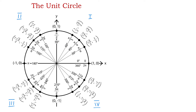In quadrant 1, we have the angles between 0 and 90 degrees — these are 30, 45, and 60 degrees. In quadrant 2, we have the angles between 90 and 180 degrees — these are 120, 135, and 150 degrees.